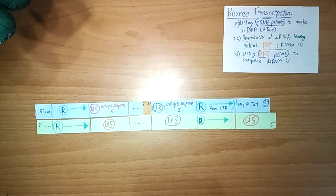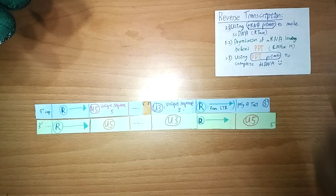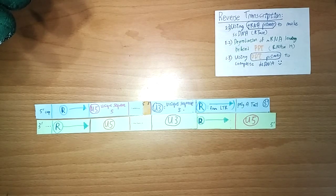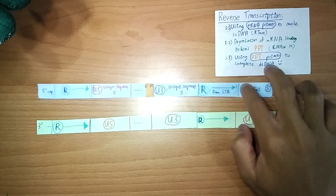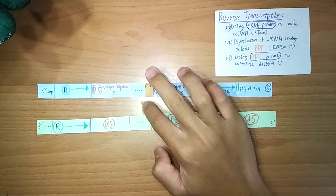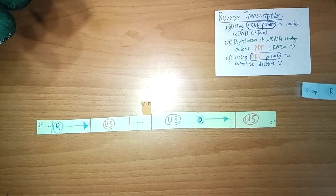Now, another enzyme comes in, which is your RNase H. It's a special kind of RNase that will degrade the entire thing, and leave behind only the highlighted portion. The orange highlighted portion. You'll see why. So it's degraded, and this is left behind.